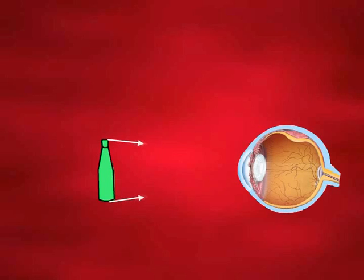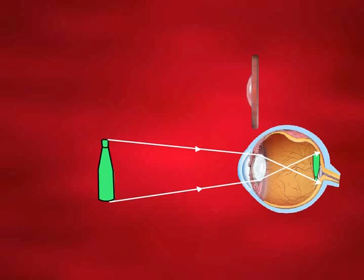When an object is kept at the near point of the eye, this results in contraction of ciliary muscles, thickening of the eye lens. The rays of light coming from the object focus at the retina and the image is formed at the retina.